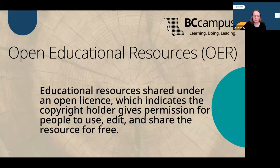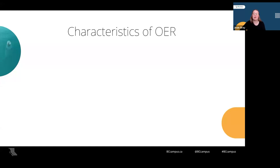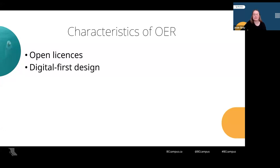Let's get to our first main concept to explore today: open educational resources, or OER. These are educational resources that are shared under an open license. The open license indicates that the copyright holder has given permission for anyone to use, edit, and share the resource for free. There are a number of characteristics of OER that make them stand out from traditional educational resources. The first and most obvious is the open license, which allows for the free sharing and editing of content. The second is digital first design — it is much easier to share and edit content if it is digital. So generally, OER are designed with the intention of them being used and shared on digital devices, although some can be printed as well.